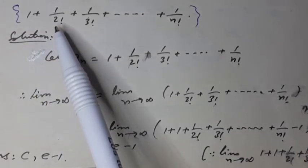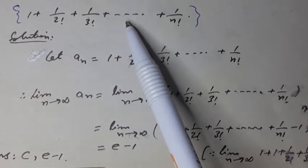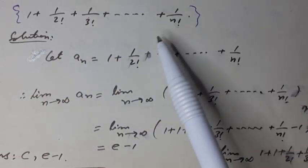Check the convergence of the sequence: 1 plus 1 over 2 factorial plus 1 over 3 factorial plus so on plus 1 over n factorial. Solution: